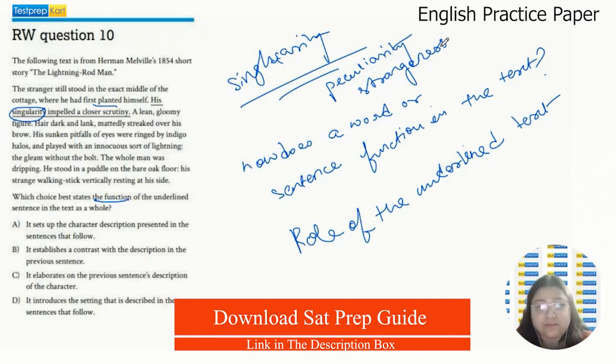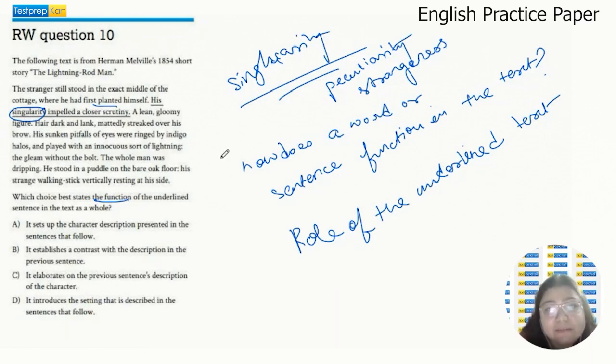So this man was strange, especially the way he was standing in the middle of the cottage. A lean, gloomy figure. Now we have some physical description. He was lean, thin, he was gloomy, sad looking.